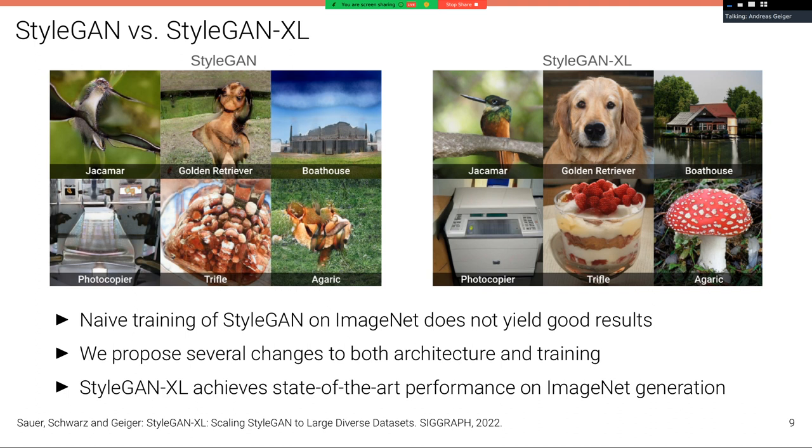So if we naively train StyleGAN, a state-of-the-art StyleGAN model on ImageNet, this does not yield very good results. Here you can see some examples for producing images, for example for a golden retriever or a boathouse here. We propose several changes to both the architecture and training to StyleGAN, to lift StyleGAN to produce reasonable results also on datasets as large and diverse as ImageNet. And this is what we call StyleGAN-XL. So here on the right you can see some results on some of the randomly picked categories of the ImageNet dataset.